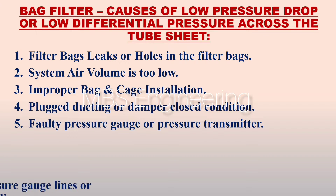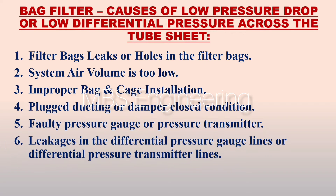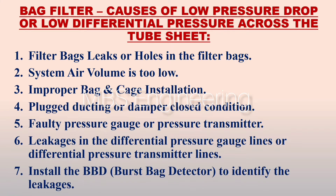Point number 5: faulty pressure gauge or pressure transmitter. Point number 6: leakages in the differential pressure gauge lines or differential pressure transmitter lines. Point number 7: install a BBD burst bag detector to identify the leakages.